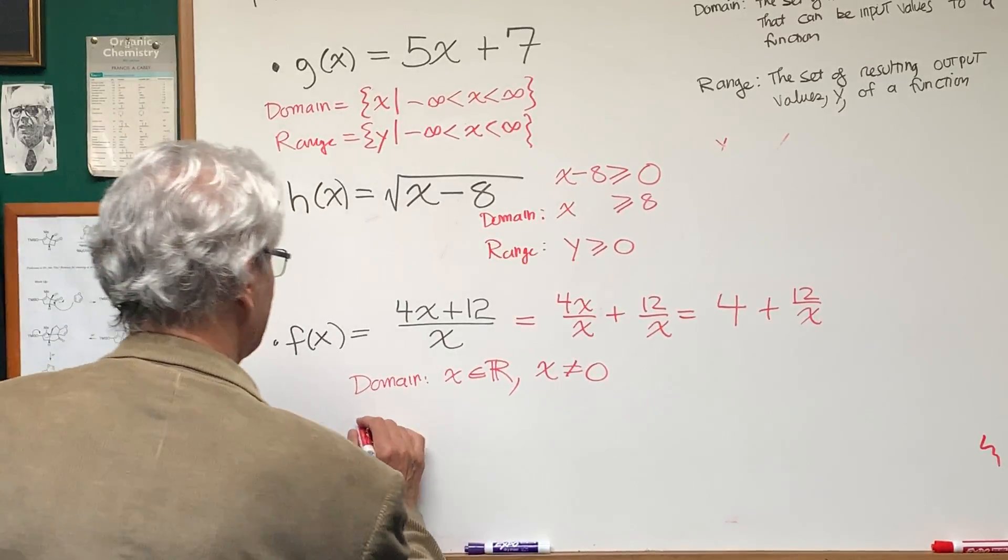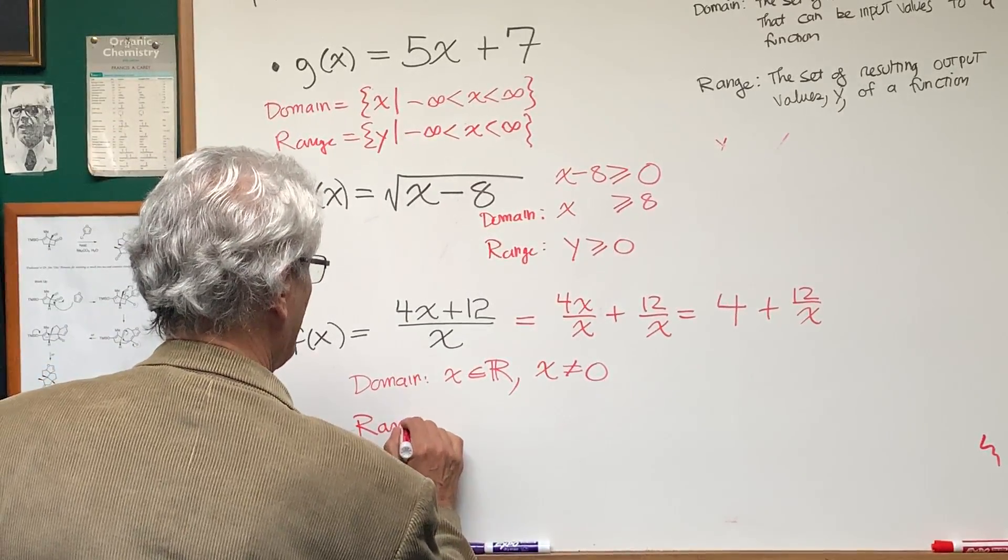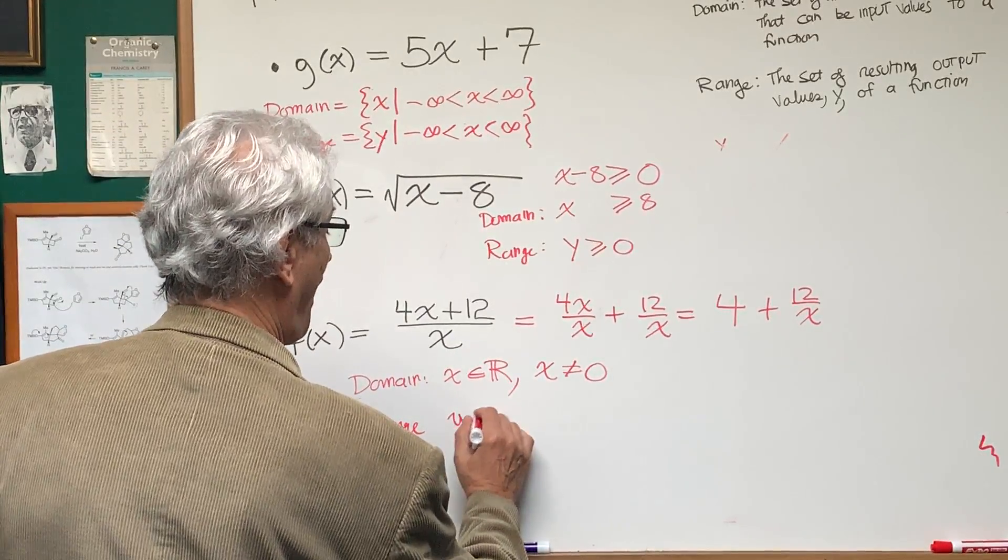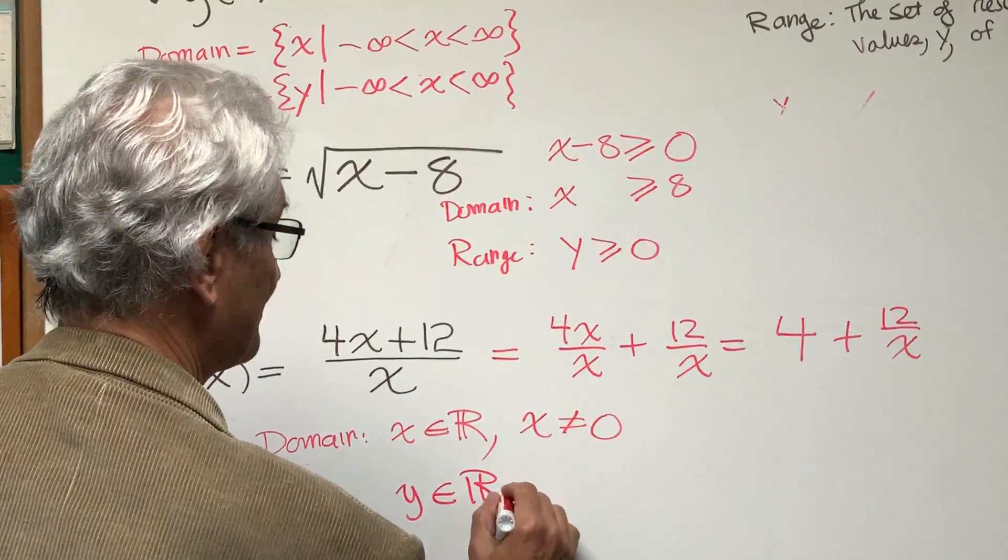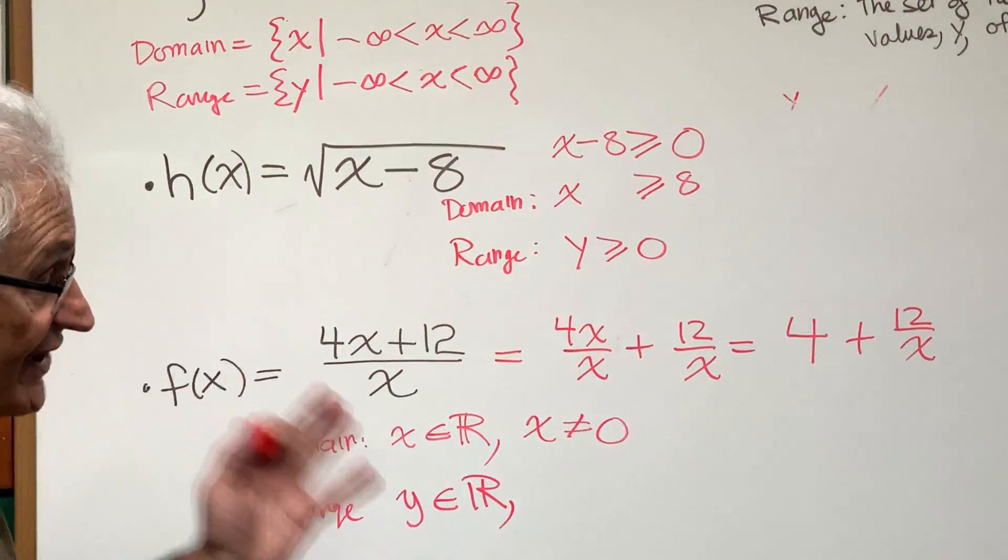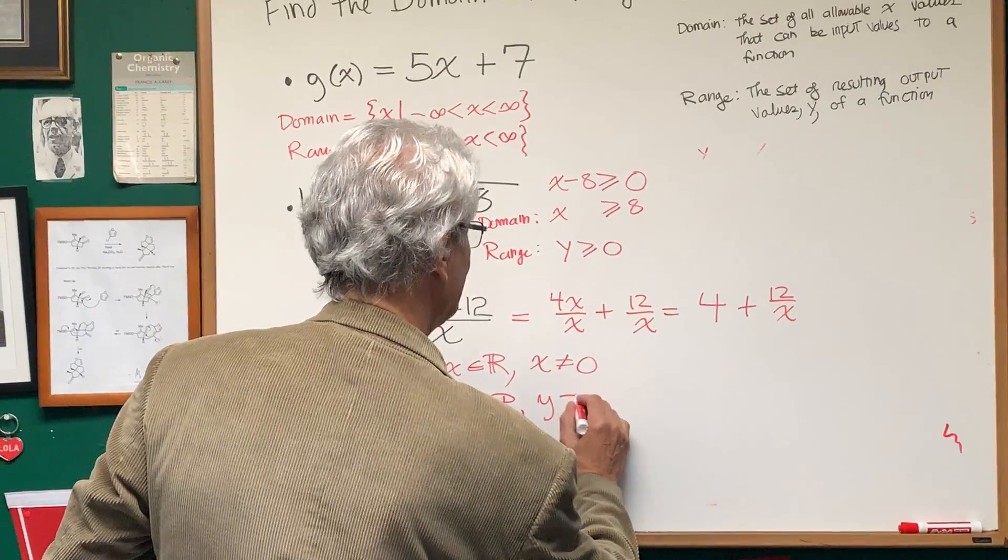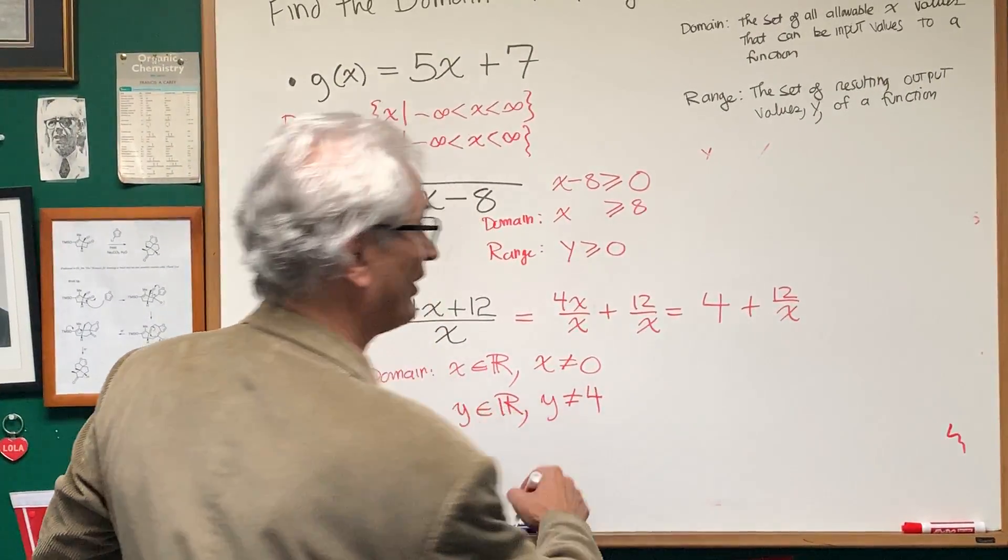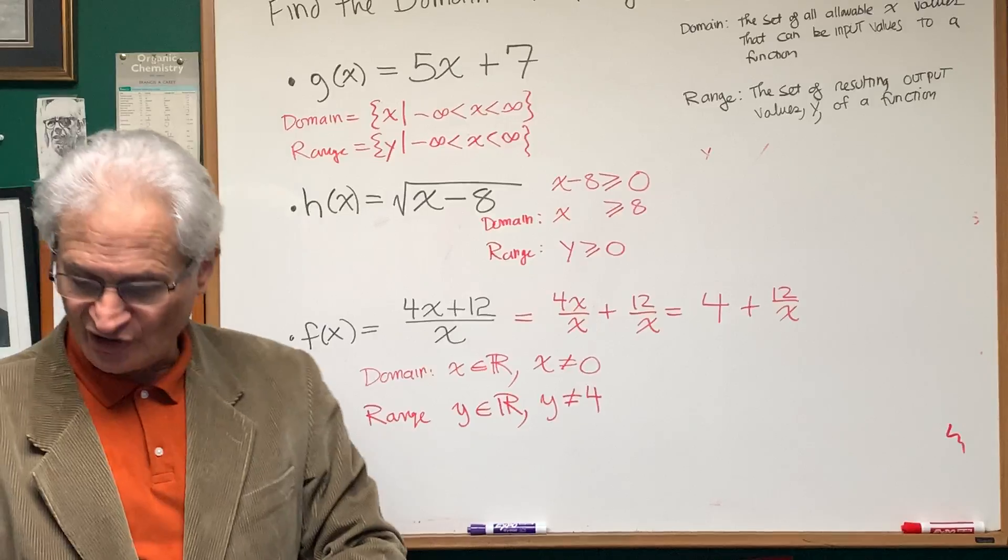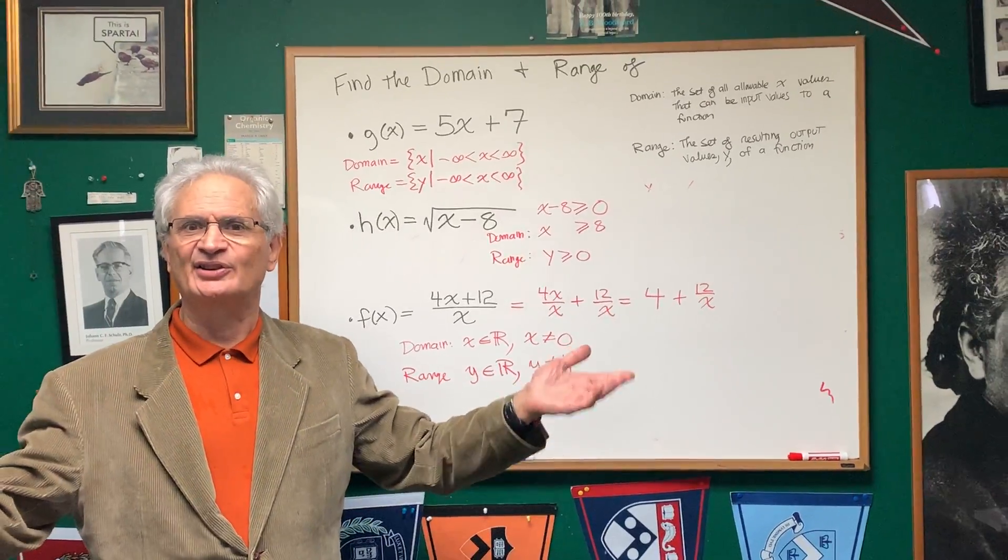We're always going to be adding or subtracting something from 4. So that means for the range of this function, the range is going to be y is all possible real numbers, except that never attainable number 4. So y is not equal to 4 from the algebraic context. So there are a few problems in domain and range.